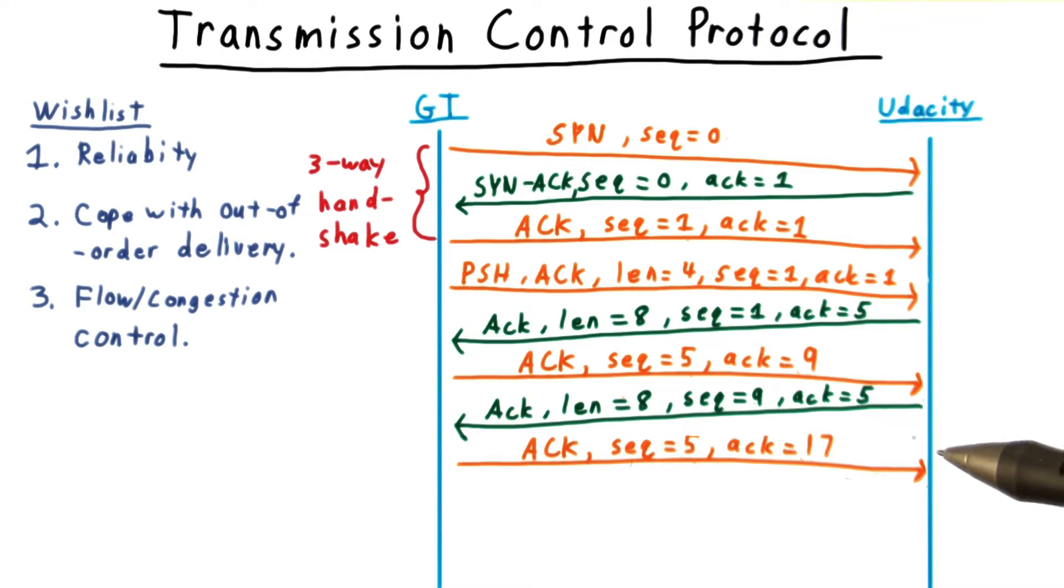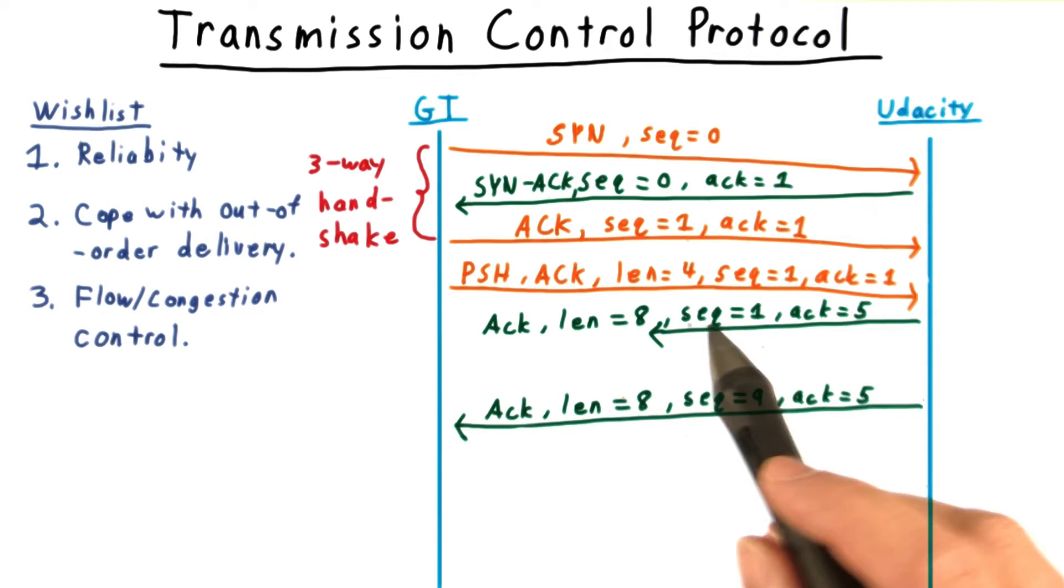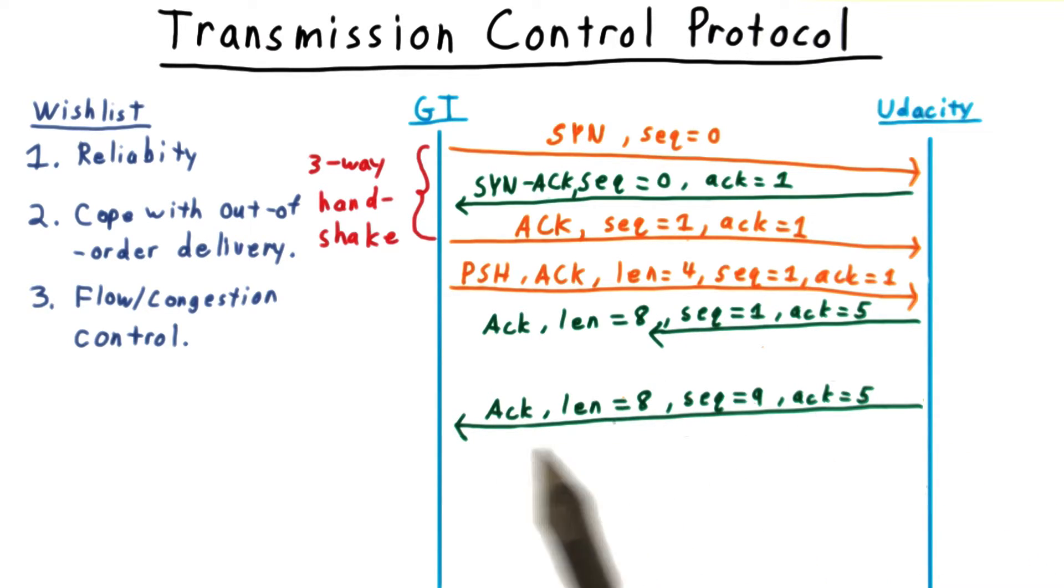To make an analogy to human conversation, this is like saying uh-huh periodically to let the other person know you are listening. Going back to the case where the first packet is dropped, we now see that upon receiving the second packet, GT would see that a packet has been dropped, and simply won't acknowledge the first one, or the latter one.